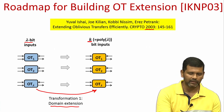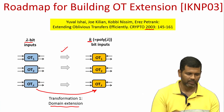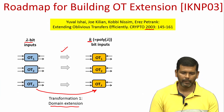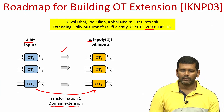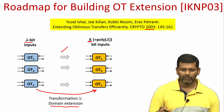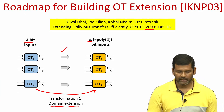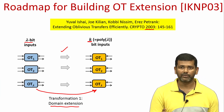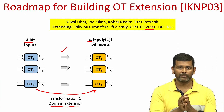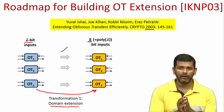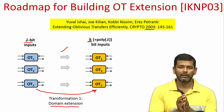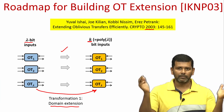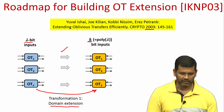How do we go from the first step to the second? We had already seen how to do this — it is done through domain extension. By running the domain extension technique from the last lecture, it is possible to get the effect of lambda OT instances where the sender's input is k bits, which is significantly larger than the security parameter, by running the same number of OT instances but on shorter inputs. But this is not the goal of OT extension; we are still running lambda number of OT instances, whereas we want the effect of a polynomial of lambda number of OT instances.